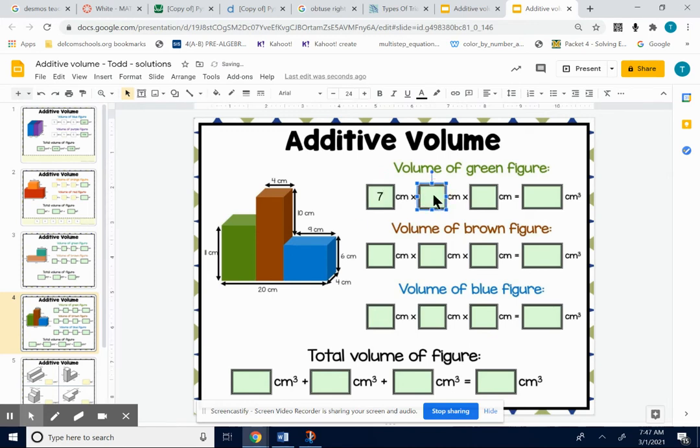And type these. The height would be 11. So the volume would be 7 times 4 times 11, which is 308.